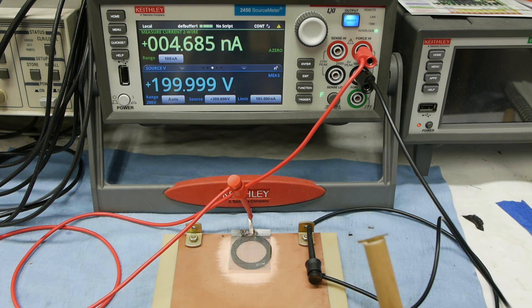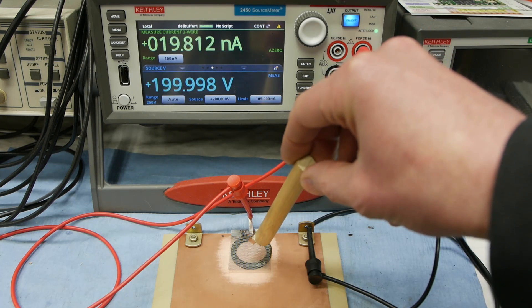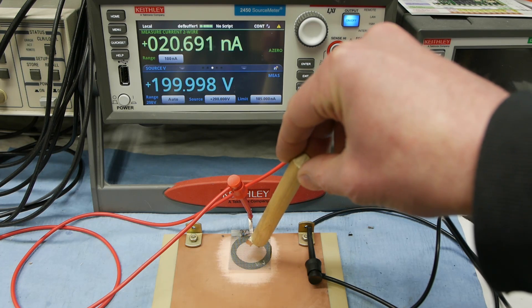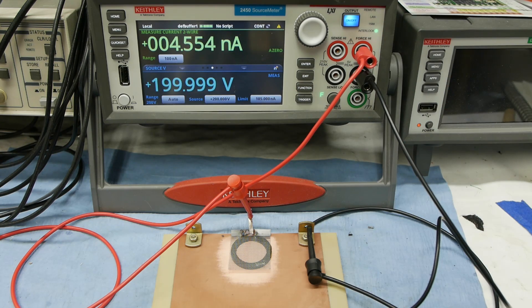But now let's take a look at the polonium source. Substantially more current, about 20 nanoamps, and when I take this away 4.5. So you can definitely see the difference in radioactivity levels of this polonium source versus the americium source.